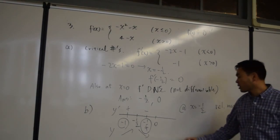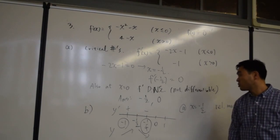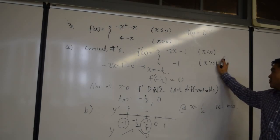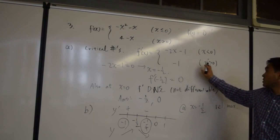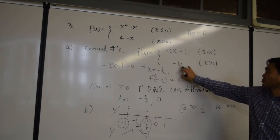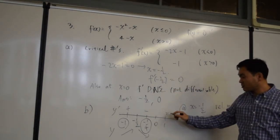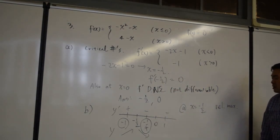Now, just out of curiosity, what happens if you plug in one into f prime? Negative one, because x is, one is greater than zero, so you have to use this restriction. So it's negative. So it's decreasing and then decreasing again.